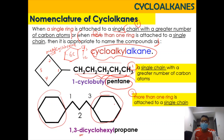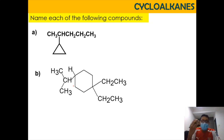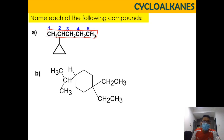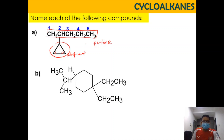Now let's look at the exercises on naming compounds. For example A, the straight carbon chain has 1-2-3-4-5, giving five carbons, so pentane is the parent name. The ring has only three carbons, so it is the substituent — cyclopropyl. The full name is 2-cyclopropylpentane.